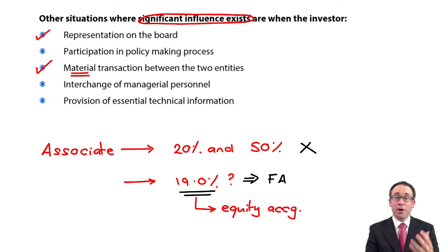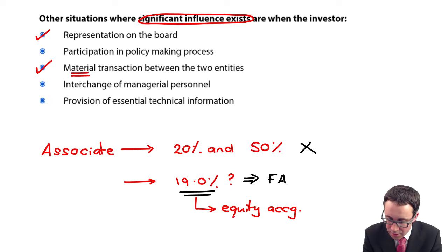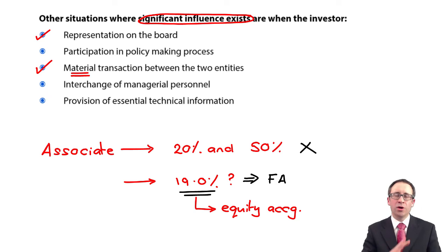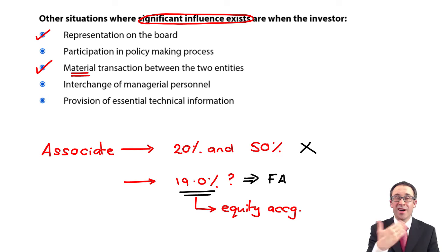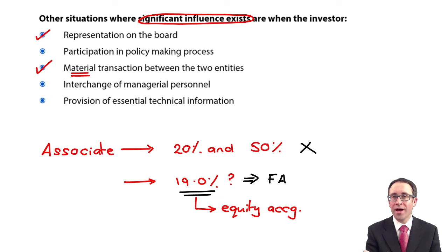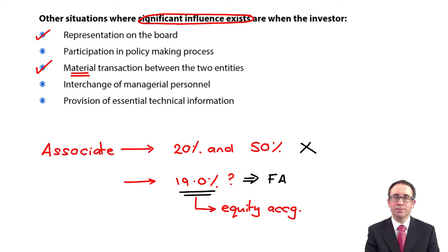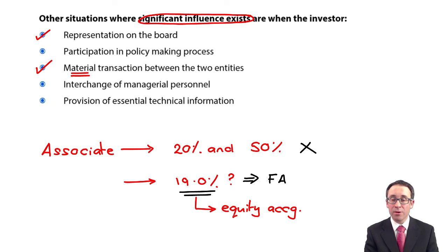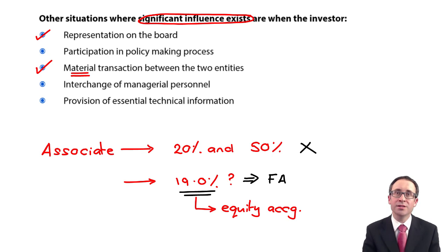I suppose it could also be linked to a question in audit. If a company has 19% and they're treating it as a financial asset at fair value through profit or loss, the audit risk is that they actually have influence which they haven't disclosed, and it should really be an investment in associate. You would need to investigate whether there's representation on the board, any material transactions, participation in the policymaking process, interchange of managerial personnel, and any technical information being provided.